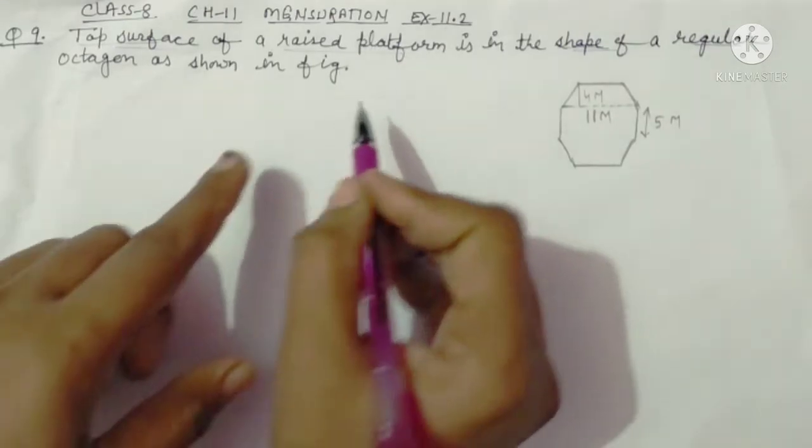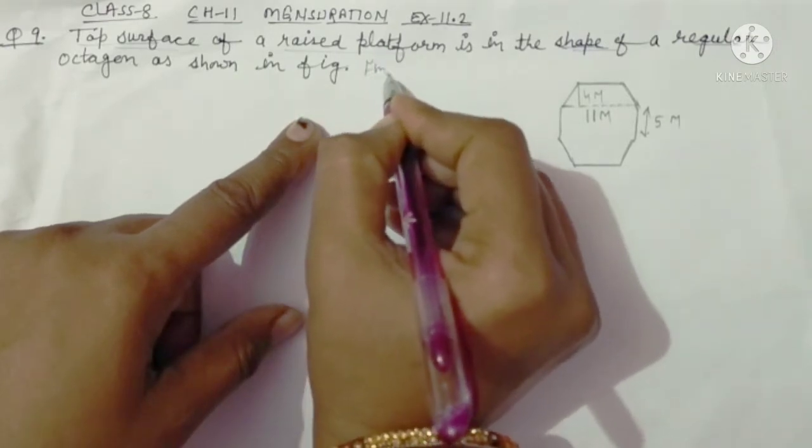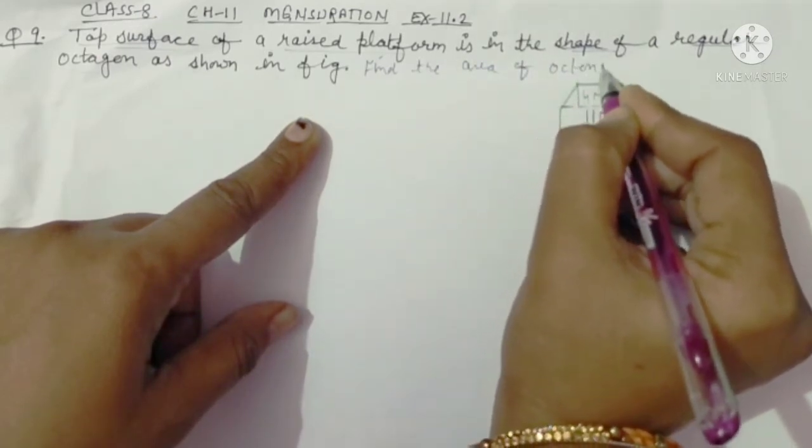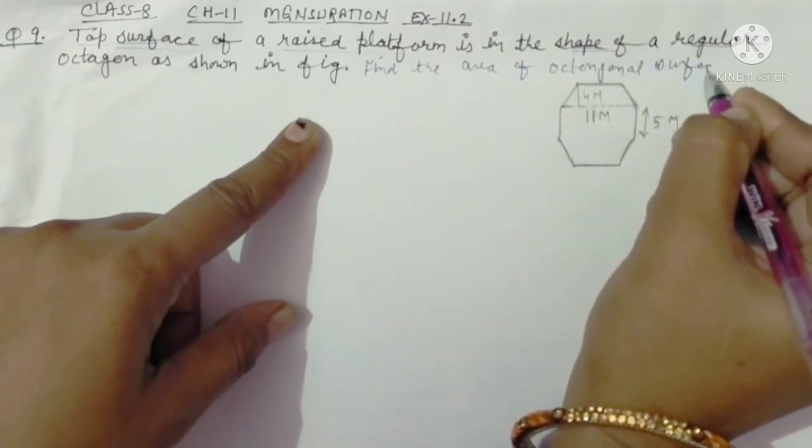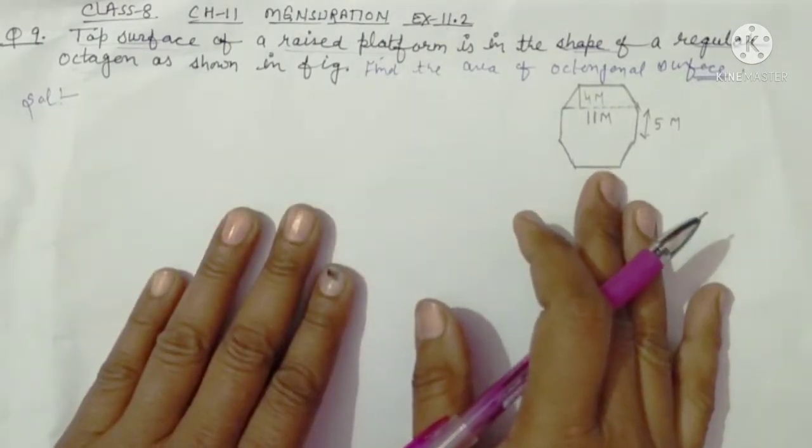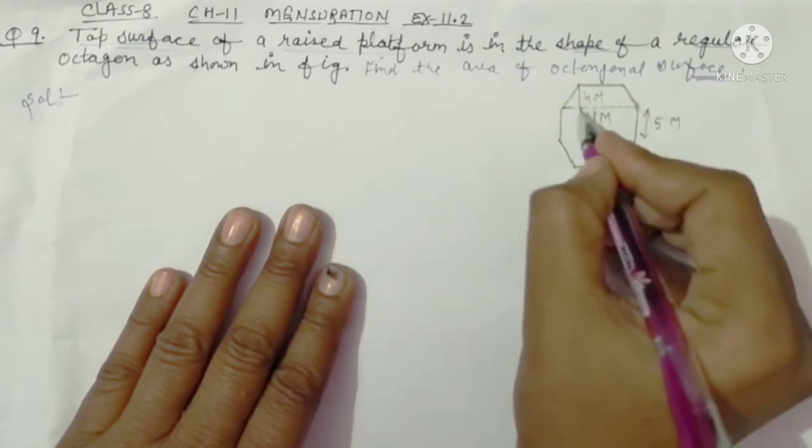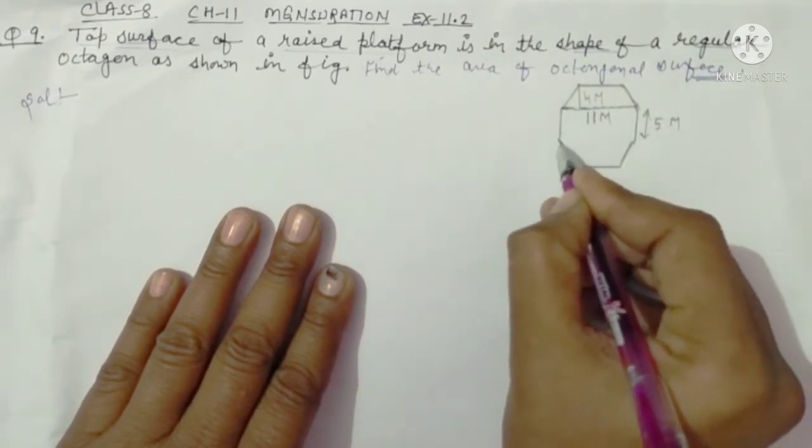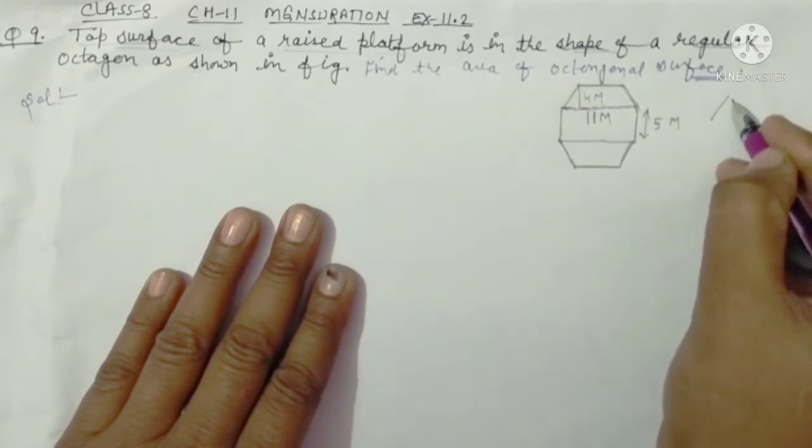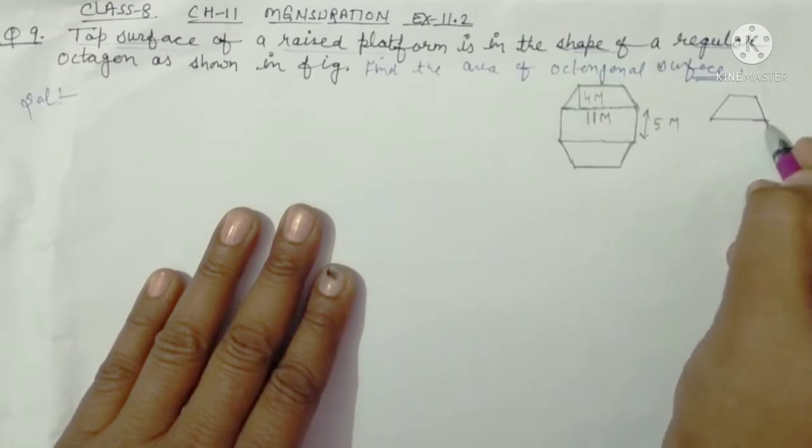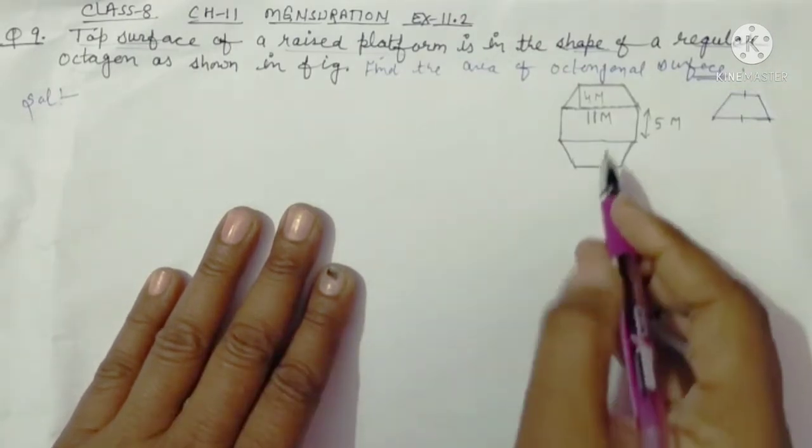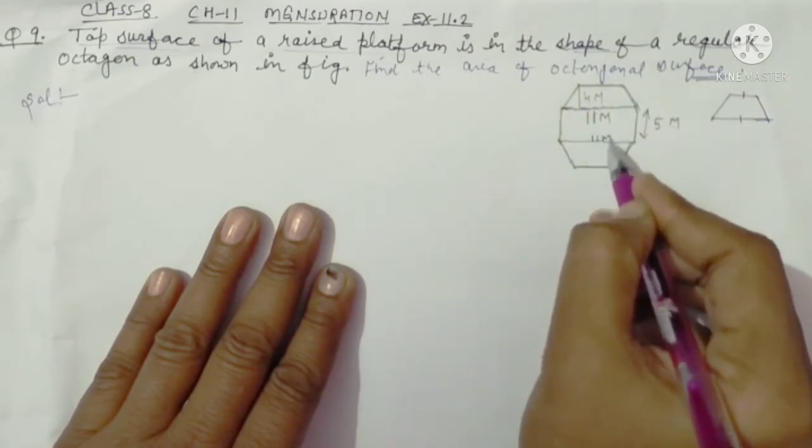As shown in figure, we will take the area of octagonal surface. We have divided this figure in three parts. We have joined this one and this one. This shape is shown in the upper and lower. This shape is a trapezium. This is 11 meters, this is 11 meters.